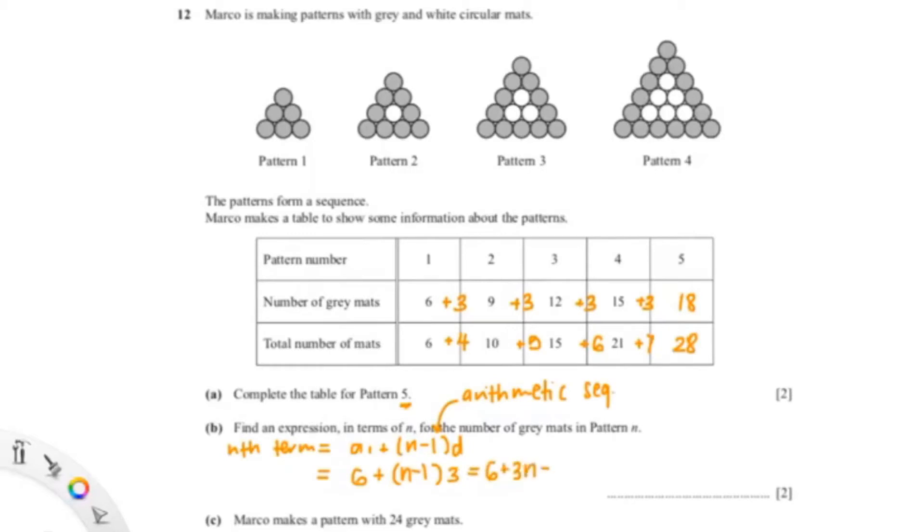So now we can expand the bracket and then simplify it, giving us 3n plus 3. And that is our n-term.